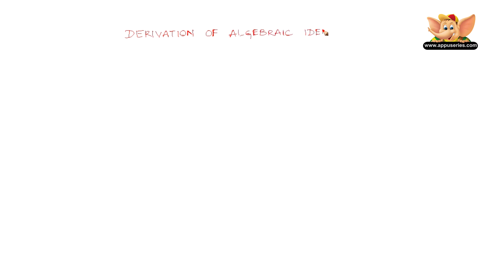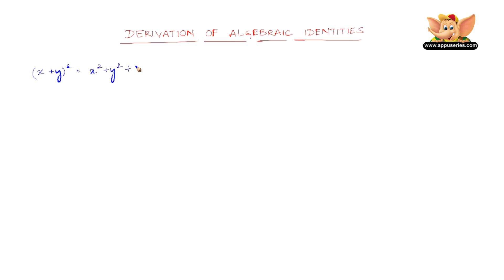Let us look into the derivation of some of the algebraic identities. The most basic one is x plus y the whole square equals x square plus y square plus 2xy.